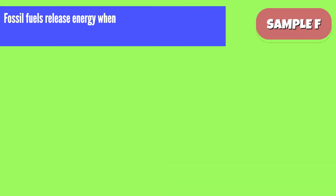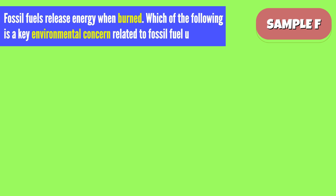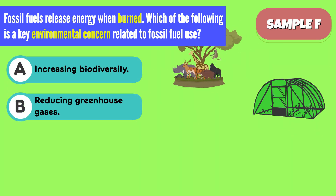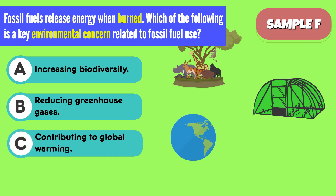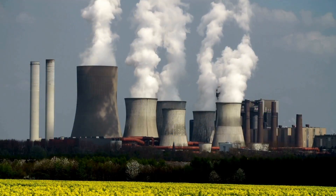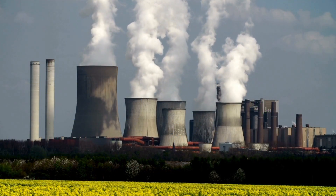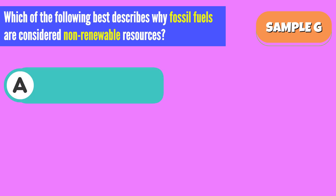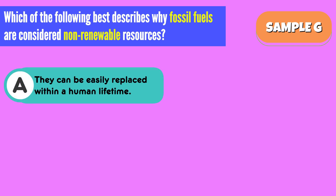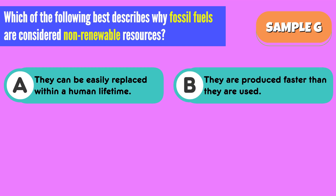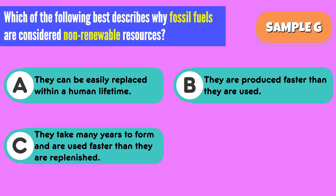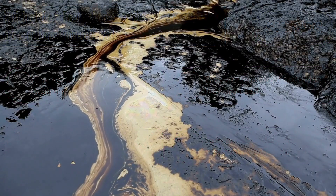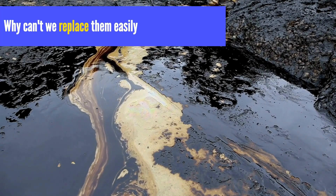Sample F: fossil fuels release energy when burned. Which of the following is the key environmental concern related to fossil fuel use? A. Increasing biodiversity. B. Reducing greenhouse gases. C. Contributing to global warming. D. Improving soil fertility. Guiding question — consider the environmental impacts of burning fossil fuels and their role in climate change. Sample G: which of the following best describes why fossil fuels are considered non-renewable resources? A. They can be easily replaced within a human lifetime. B. They are produced faster than they are used. C. They take many years to form and are used faster than they are replenished. D. They are abundant and found everywhere on Earth. Guiding question — think about how long it takes for fossil fuels to form compared to how quickly we consume them. Why can't we replace them easily once they are used?